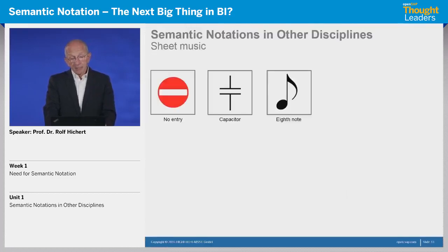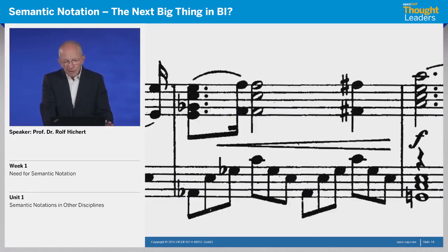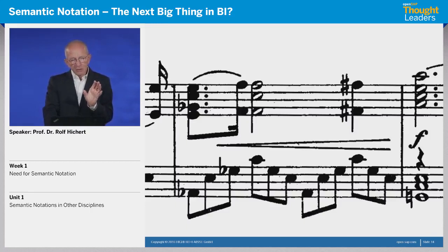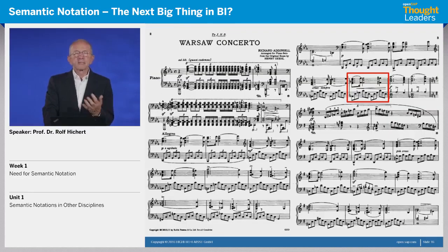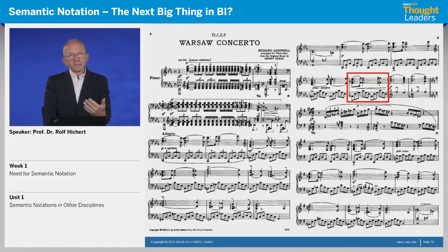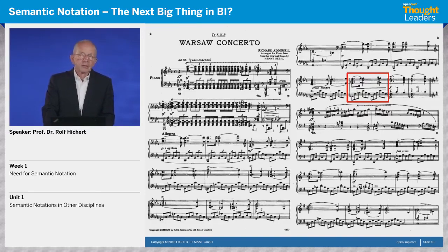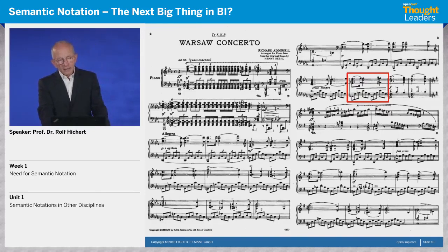Coming back to music again, it is a very good example. Look at this one bar of a concerto — and on two pages you might have 30 or 40 times as much, which represents this music. Sheet music is an excellent example of a good notation with semantic layers.